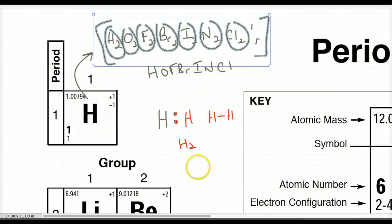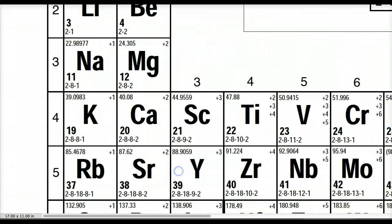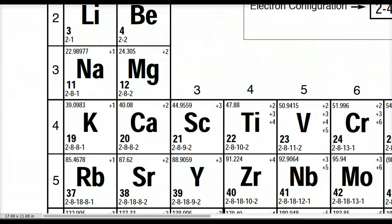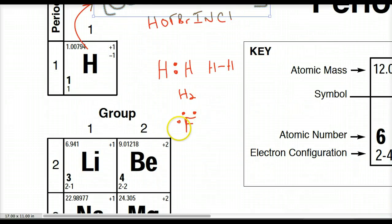And we can go down the list, fluorine, in the second energy level. Again, we're getting beyond the scope of this course, but I'm giving you why. It has eight valence electrons, seven valence electrons, or seven electrons in its outermost shell.